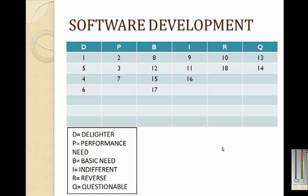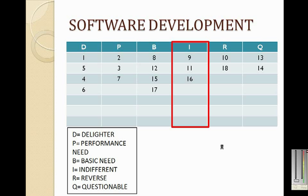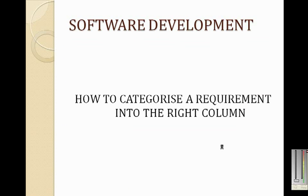Now, how is Kano analysis used in software development for prioritizing user requirements? By using similar categories, we can group user requirements depending on the level of importance of each requirement. However, the problem is how we can categorize a particular requirement into the right column, since it is very unlikely that end users can prioritize their own requirements by themselves.